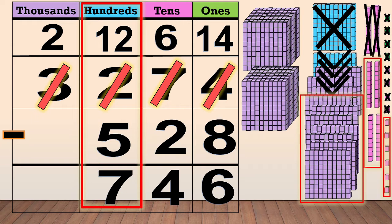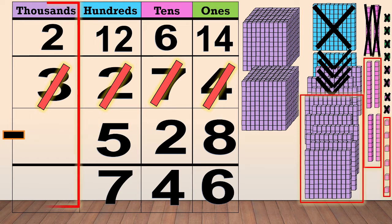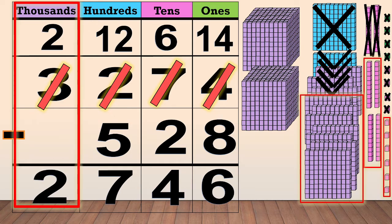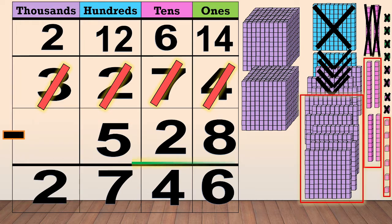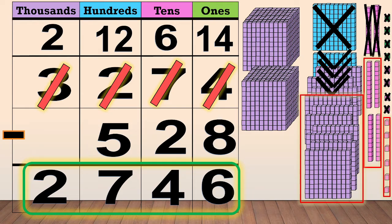Now, we subtract the thousands. We have 2 thousands, but there is no number in the thousands column of the subtrahend. That means there is nothing to subtract, so we bring down the 2 thousands. Our final answer is 2,746.